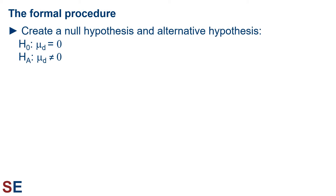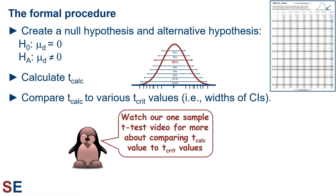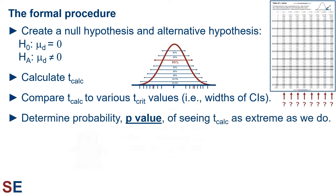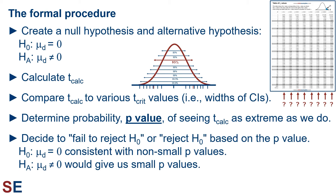We create a null hypothesis that the mean of the differences is zero, and an alternative that the mean is not equal to zero. We get a t-calculated value using the equation, then compare it to t-critical values corresponding to different confidence intervals based on the t-distribution for our degrees of freedom. We determine the p-value — the probability of seeing our sample data if the null hypothesis is true. If the p-value is not small, we fail to reject the null hypothesis and conclude we lack evidence that the population means differ. If the p-value is small, we reject the null and conclude we have good evidence the population means are different.